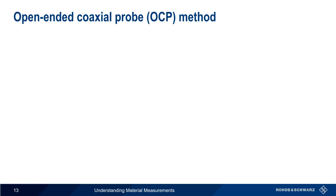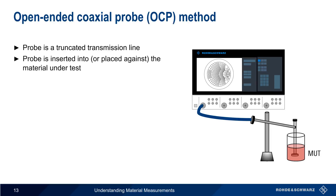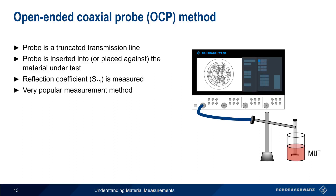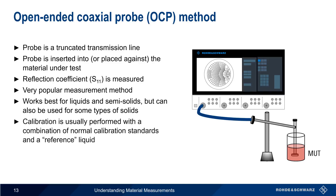So how do we measure the complex permittivity of things like liquids, or materials that can't be easily cut or prepared into the desired shape? This is an area where the open-ended coaxial probe, or OCP method, works very well. In this method, a probe is essentially made by truncating a transmission line. This probe is then inserted into, or sometimes placed up against, the material under test, and a reflection or S11 measurement is made. Calibration is usually performed using a combination of the normal calibration standards and a reference liquid, like water, saline, or methanol.